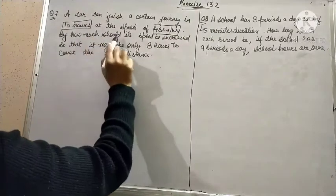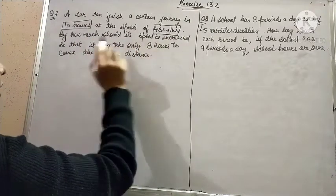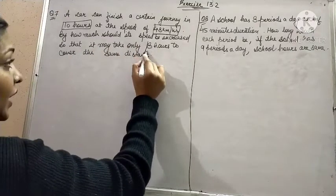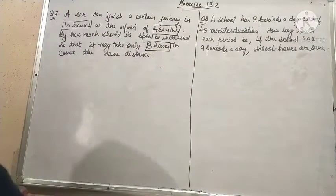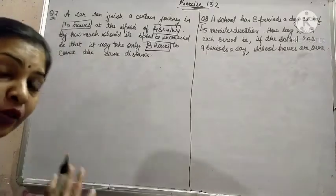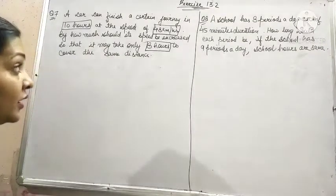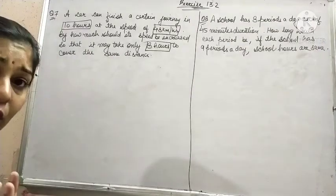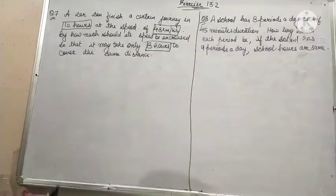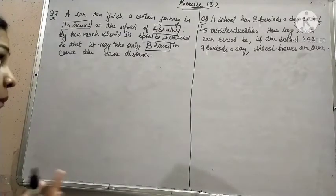By how much should its speed be increased so that it may take only 8 hours to cover the same distance? Now this is a problem of speed and time, and I have already told you that whenever there is a problem of speed and time, they are inversely proportioned.